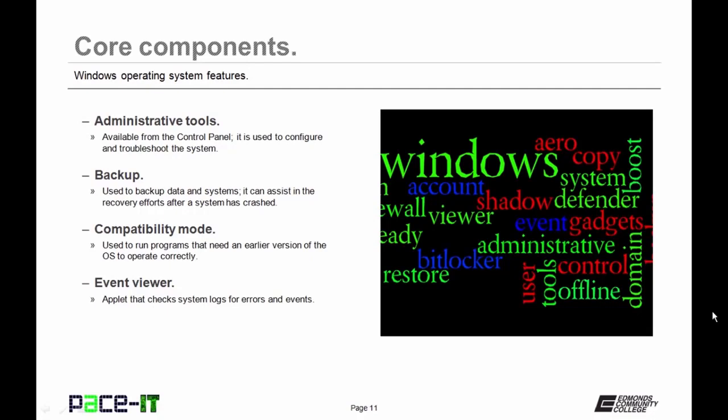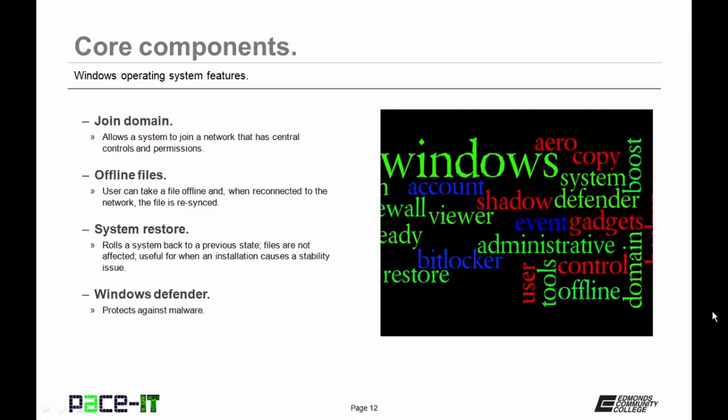There's compatibility mode, especially in Vista, Windows 7, and Windows 8. Sometimes they have difficulty running programs developed for Windows XP, and you can run those in compatibility mode. All versions have an Event Viewer so you can check system logs for errors and events. Some versions allow you to join domains, which provides much better networking than workgroups.